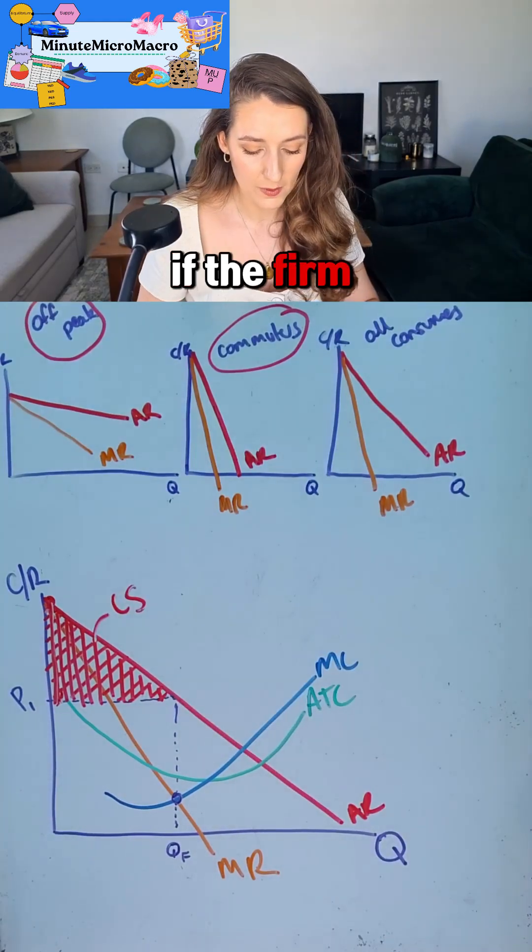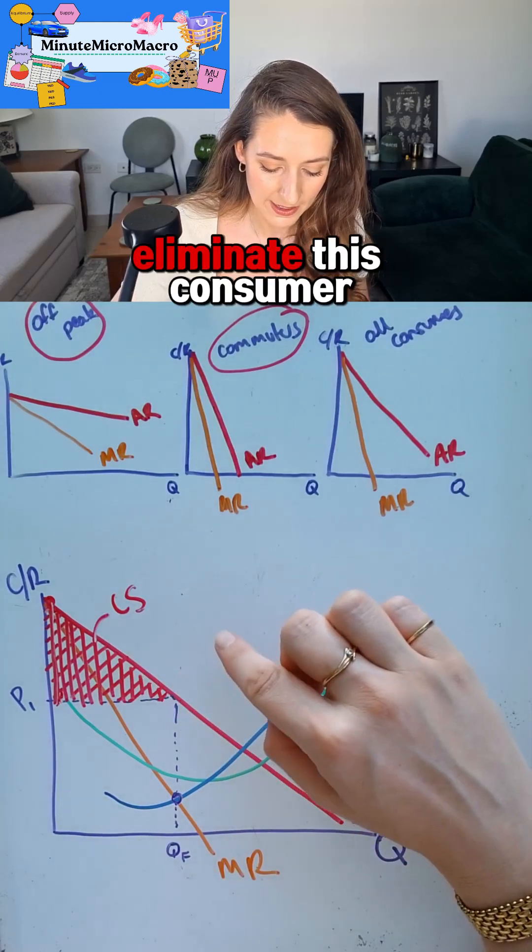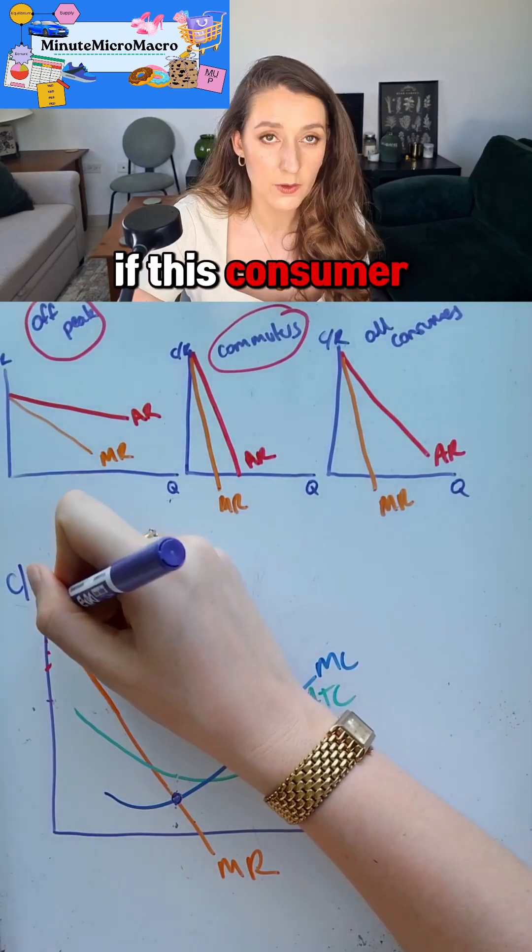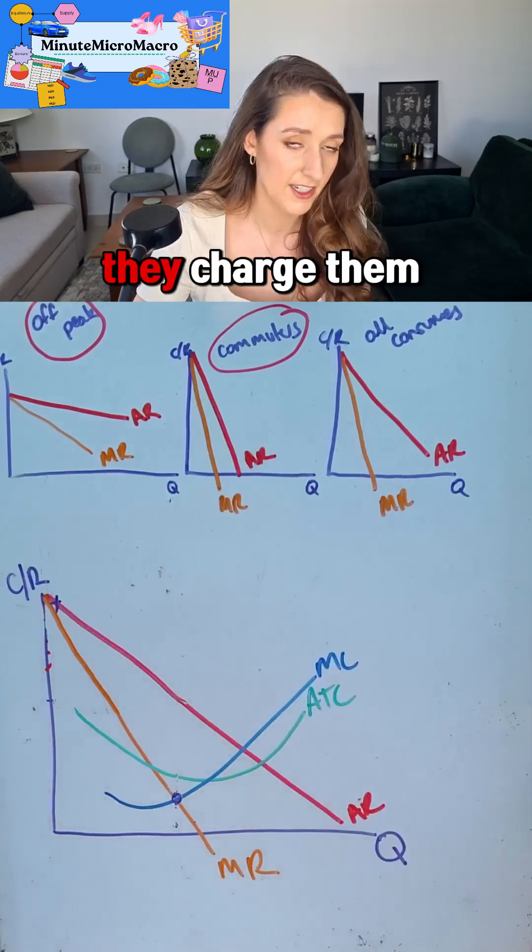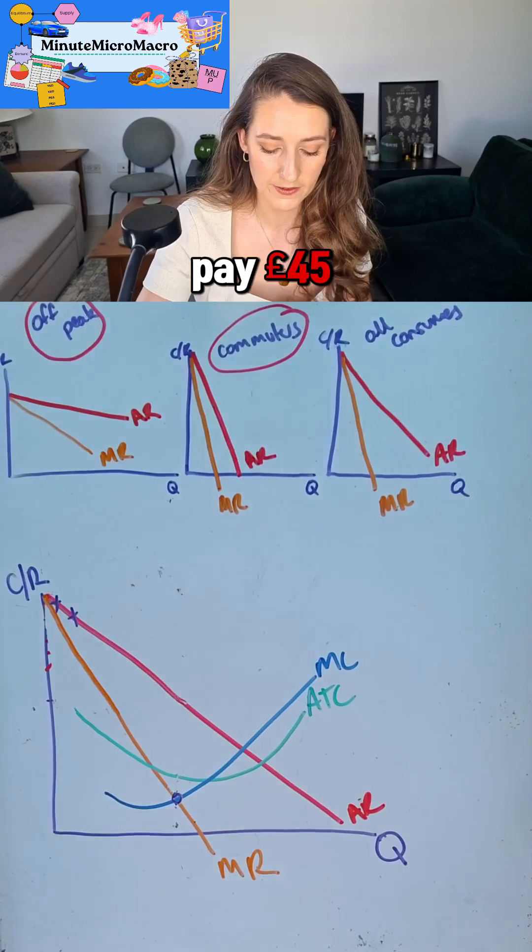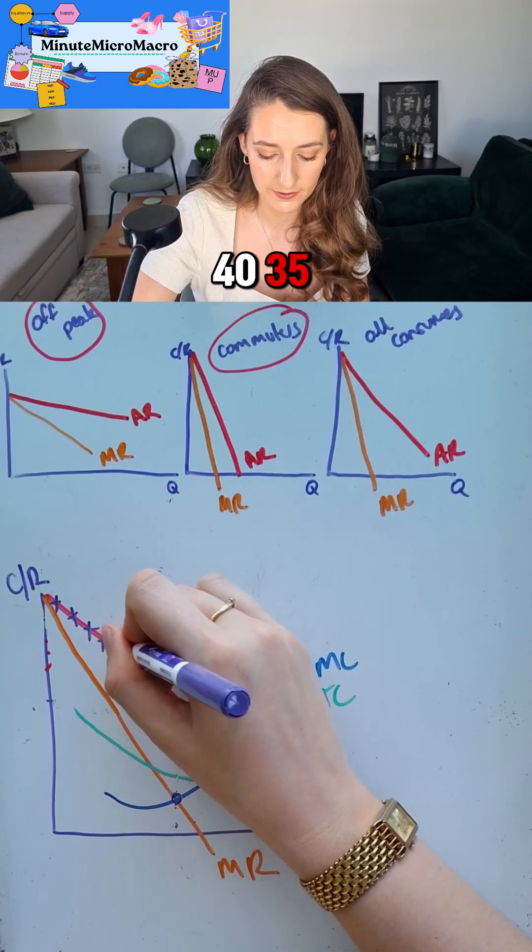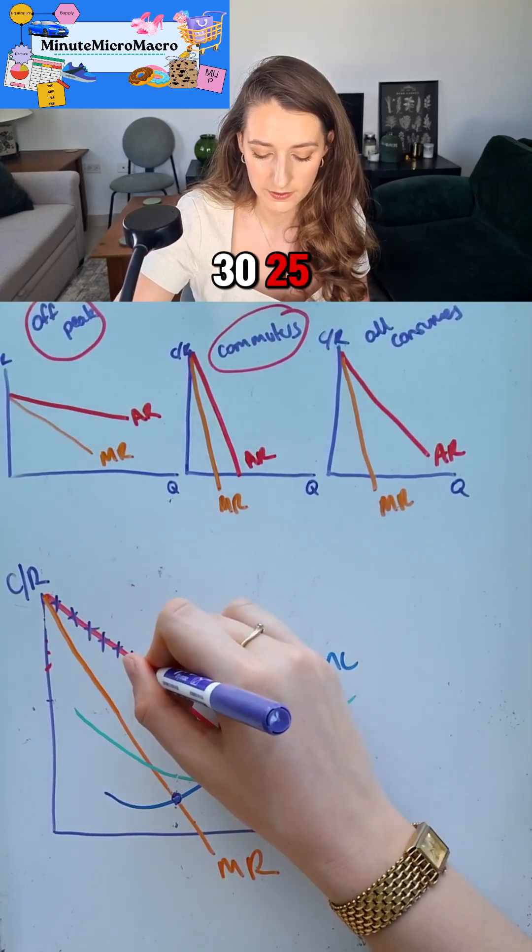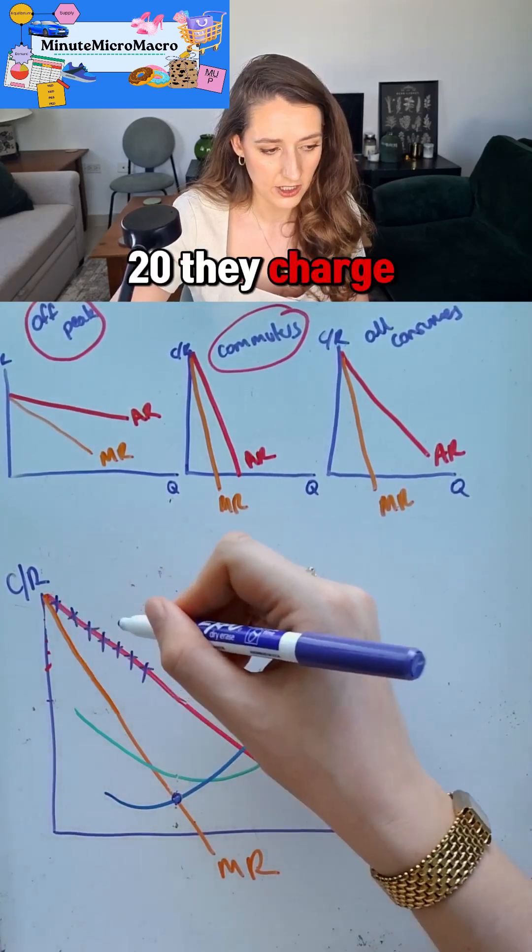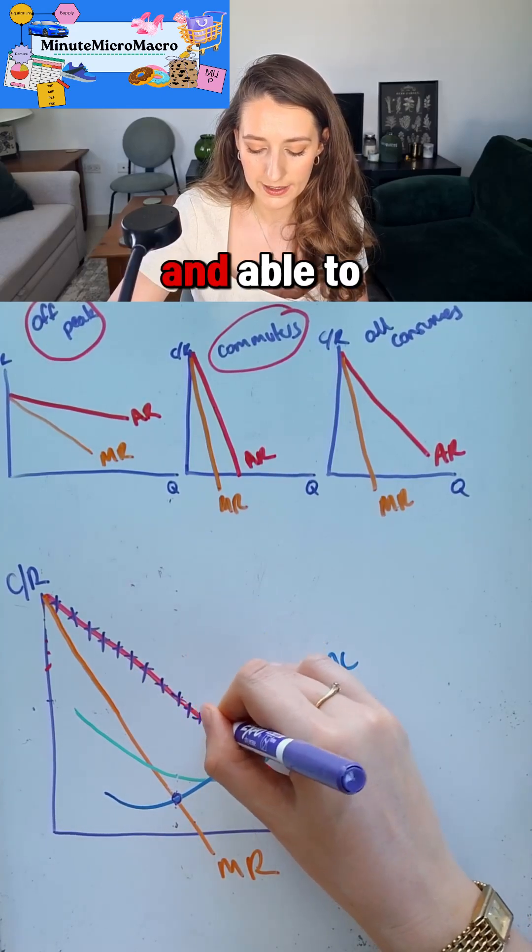However, if the firm can now charge each person the exact amount they're willing and able to pay, we're going to eliminate this consumer surplus. If this consumer was willing to pay 50 pounds, they charge them 50 pounds. This consumer was willing to pay 45 pounds, and they charge them 45 pounds. They charge that person 40, 35, 30, 25, 20. They charge every single person the absolute maximum they were willing and able to pay.